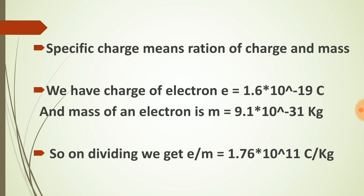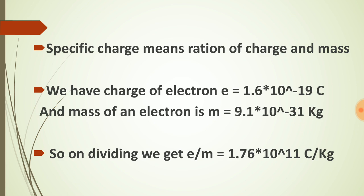In the same way, you can find the specific charge of a proton. The mass of a proton is 1 AMU, which is 1.67 × 10⁻²⁷ kg, and the charge of a proton is equal to the charge of an electron: 1.6 × 10⁻¹⁹ coulombs. By dividing the charge of the proton by its mass, you will get the specific charge of the proton.